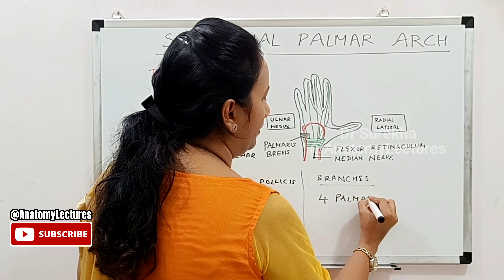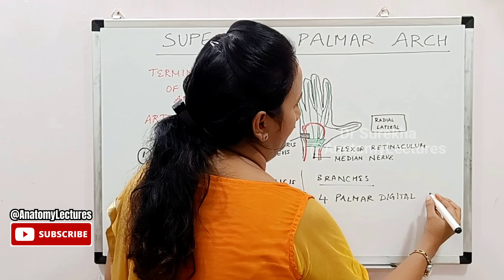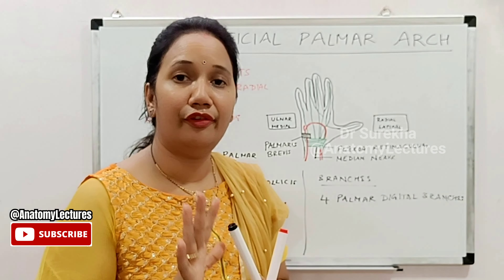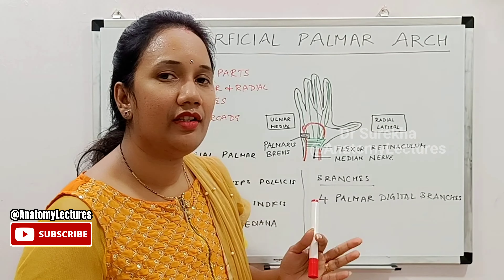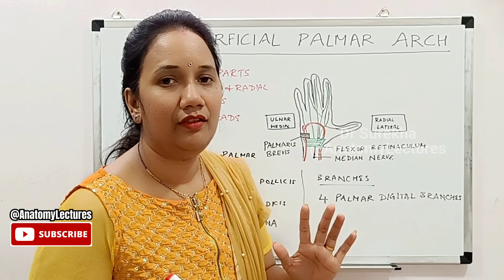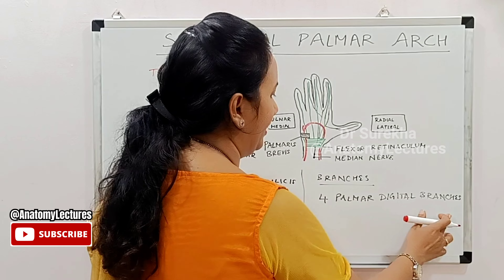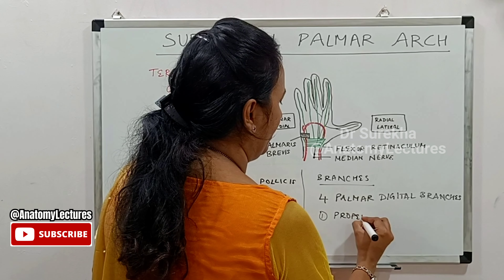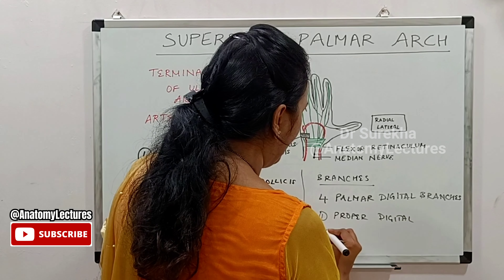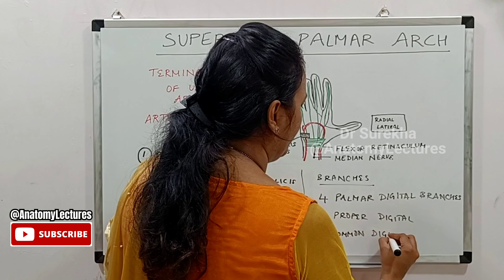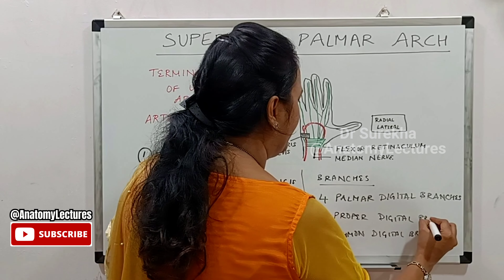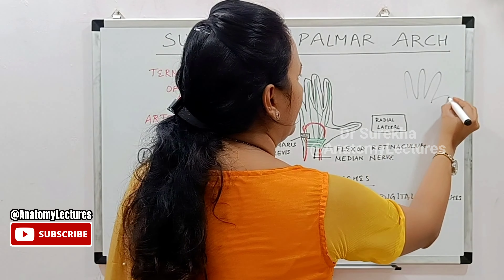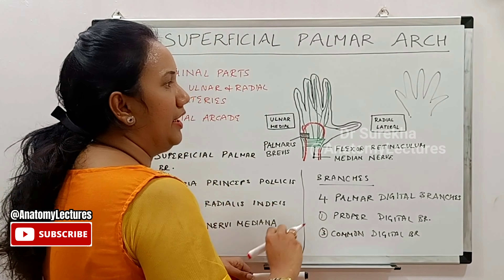To summarize, the superficial palmar arch is an arterial arcade in the palm formed by the superficial branch of the ulnar artery, completed by one of four branches of the radial artery: the superficial palmar branch, the arteria princeps pollicis, the arteria radialis indicis, or the arteria nervi mediani. These branches of the radial artery complete the superficial palmar arch from the lateral aspect.